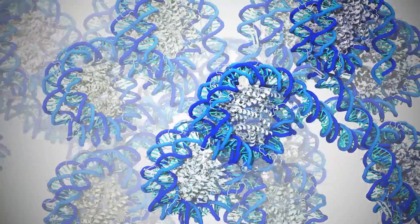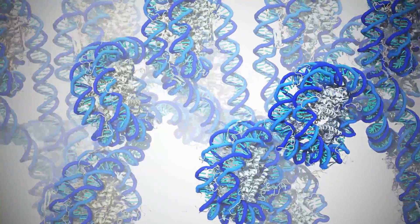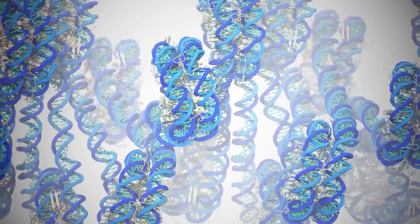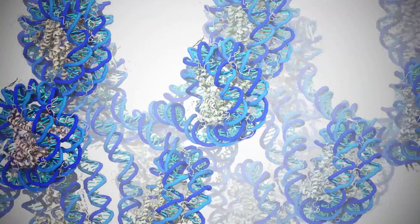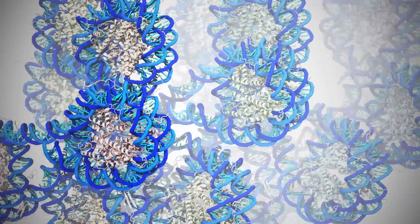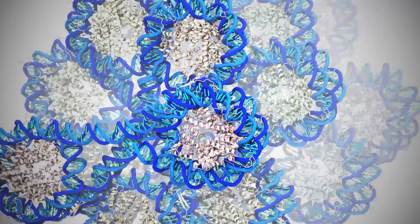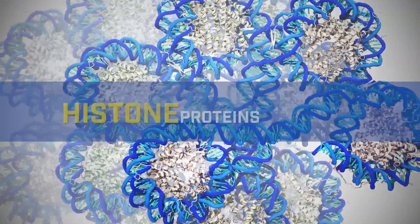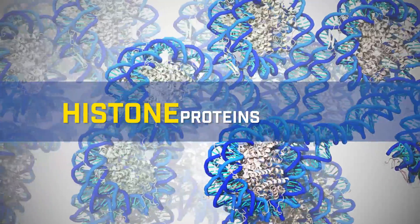The blue ribbons are the DNA double helical formations, and the white squiggles are these molecular spools called histone proteins.